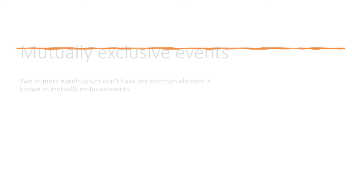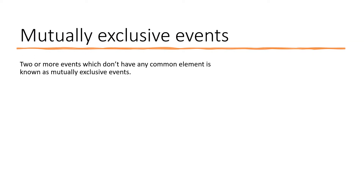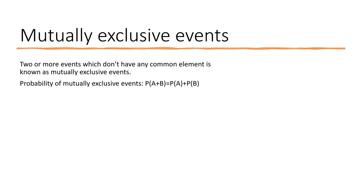Now we move on to the next topic: mutually exclusive events. Two or more events which do not have any common elements are known as mutually exclusive events. The probability of mutually exclusive events is calculated as: if A and B are mutually exclusive, then P(A or B) = P(A) + P(B).